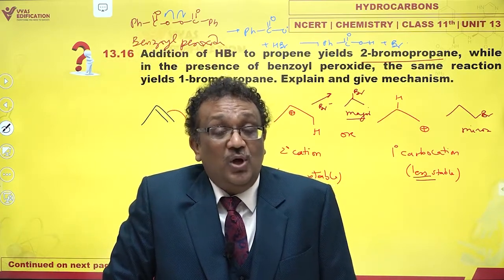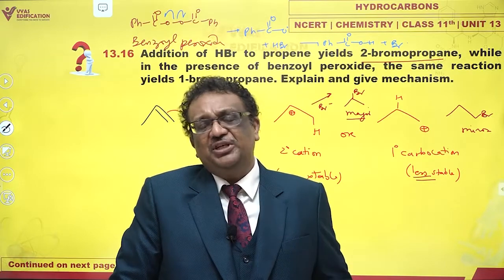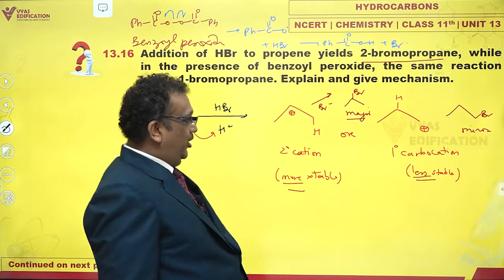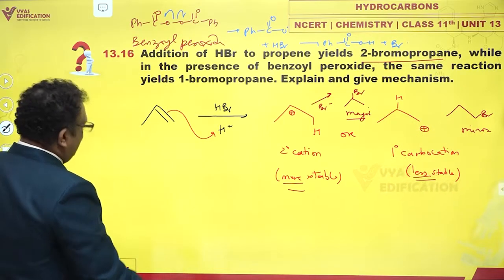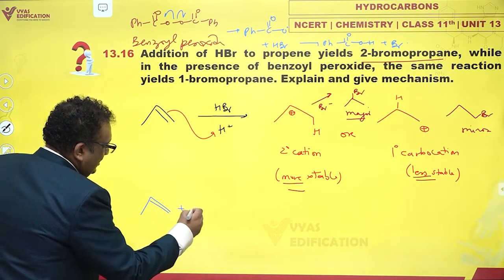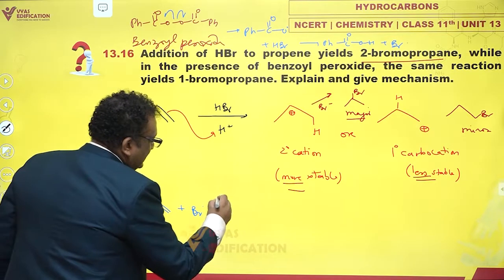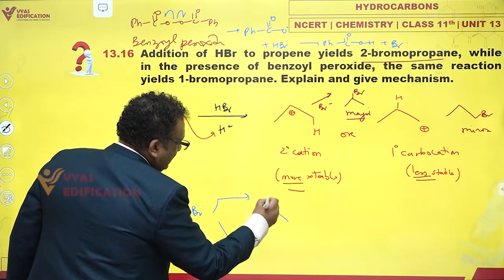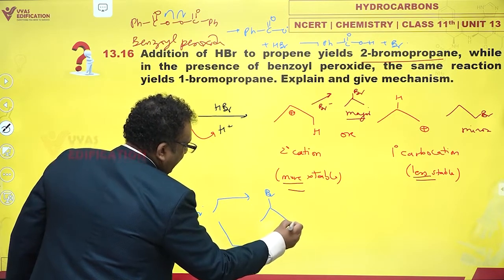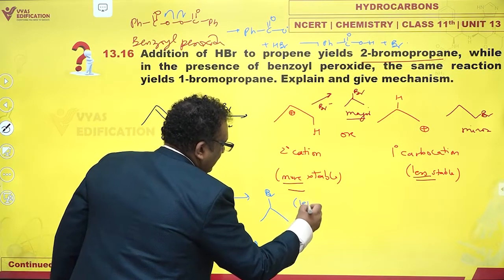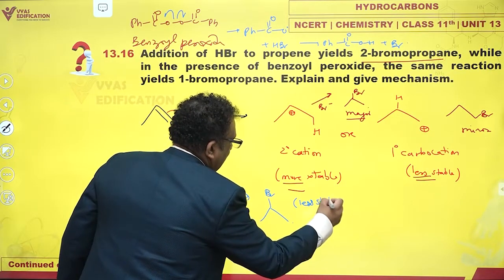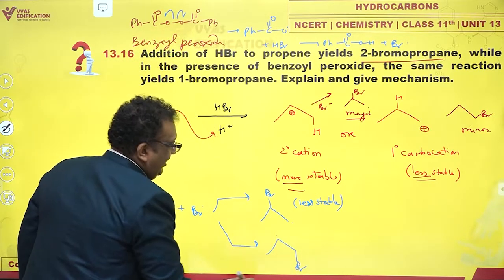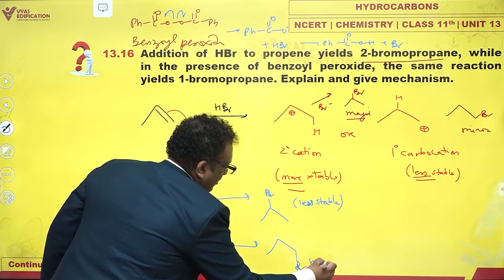So benzoyl peroxide is an initiator — in very tiny quantities it gives you bromine radicals. Once we have Br radicals, the fun begins. If you add Br• to propene, there are two ways it can add. If it adds on carbon number 1, I get a primary radical, which is less stable. And if it adds on carbon number 2, I get a secondary radical, which is more stable.